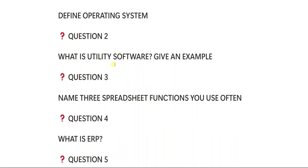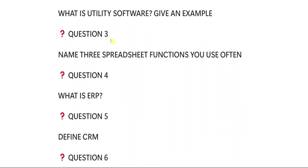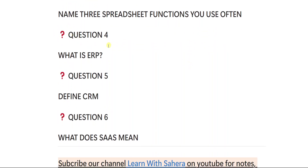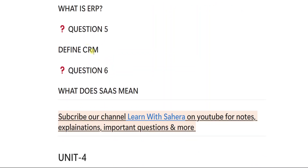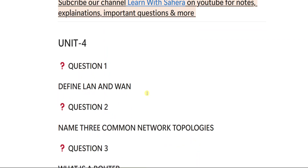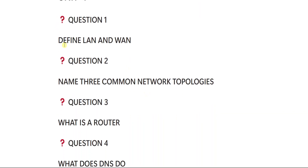From unit number three: one — define operating system; two — what is utility software, give an example; three — name three spreadsheet functions you use often; four — what is ERP; five — define CRM; six — what does SaaS mean.